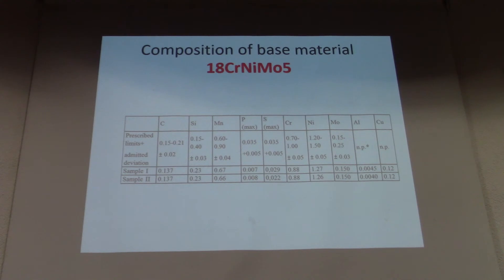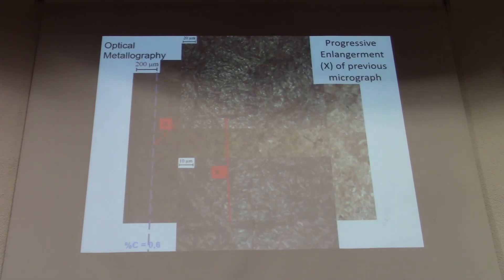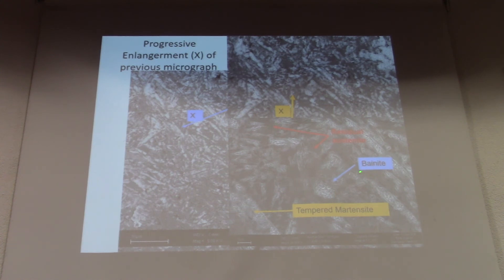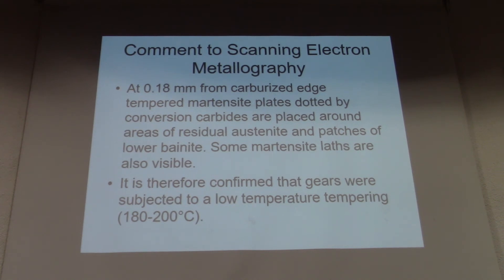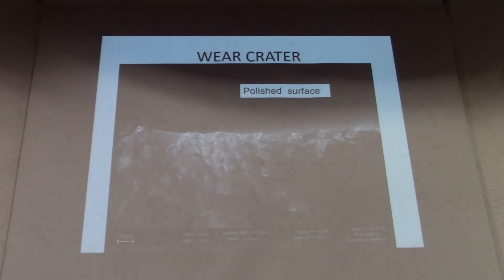Both studies and SEM analysis at around 1.4 mm carbon depth confirmed the presence of tempered martensite; we also found patches of retained austenite. Having confirmed that the gears were subjected to a low-temperature tempering, we then examined the pits to look for clues to the failure. We found that the craters were characterized by intergranular fracture with very fine features, as shown in the SEM fractography photographs.